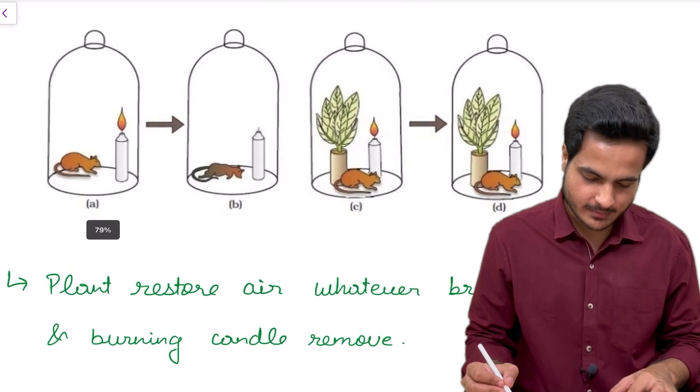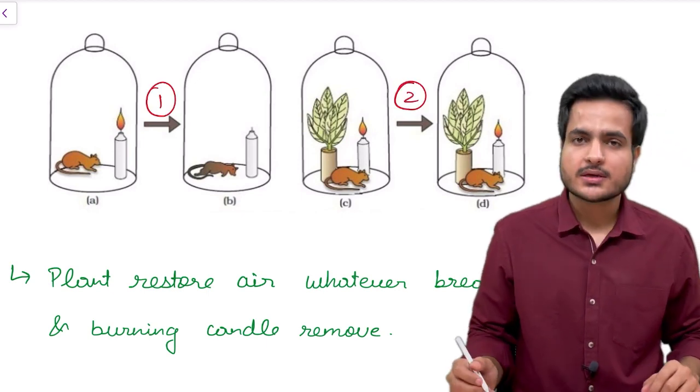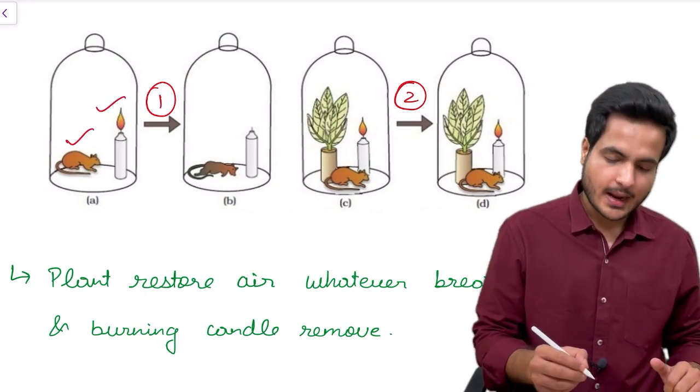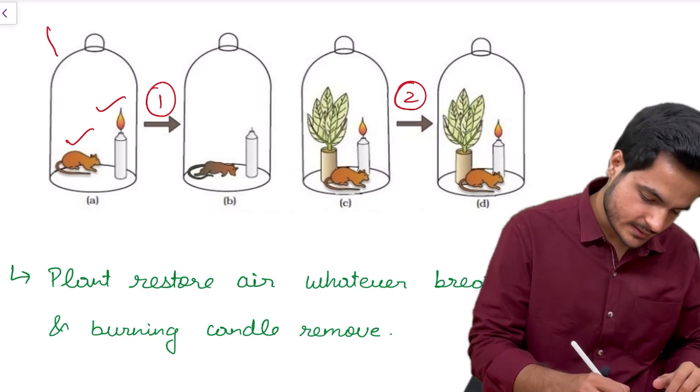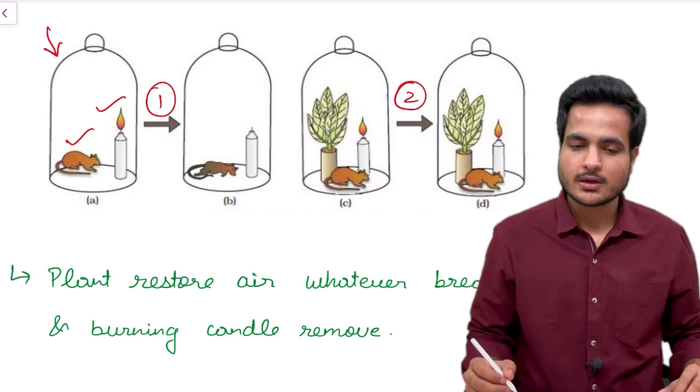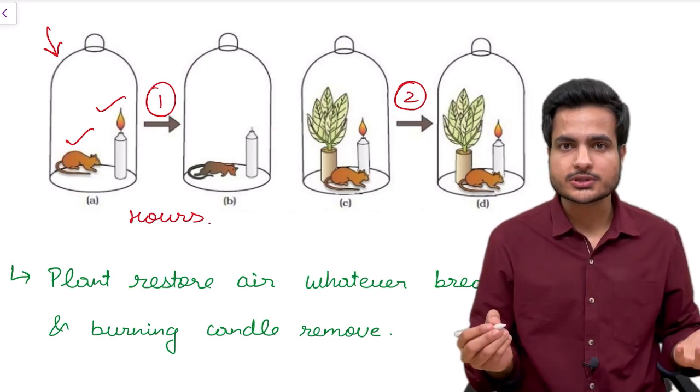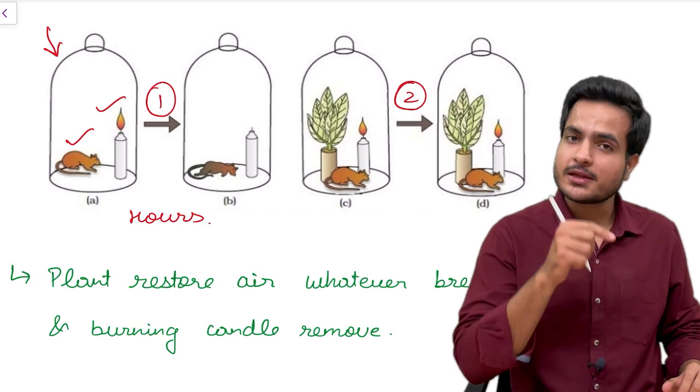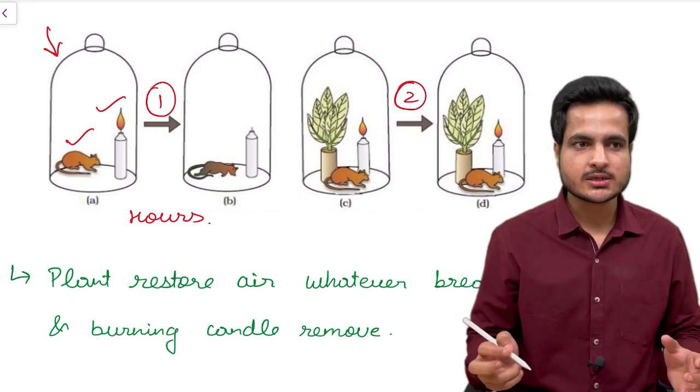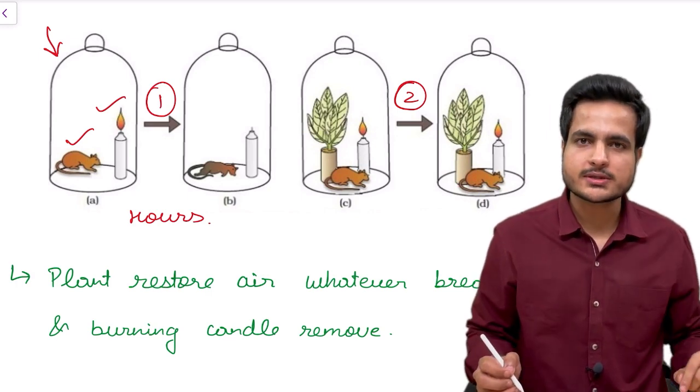Let us study what was his experiment on candle bell jar. He did his experiment in two stages. In the first stage, he used a mouse, a living mouse and a burning candle, and he placed a bell jar over that. He came after few hours and saw that the mouse died and the candle flame extinguished. So he said this living mouse and burning candle is removing something from the air which is leading to a stage where the animal could not survive more and similarly the candle flame.